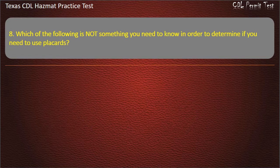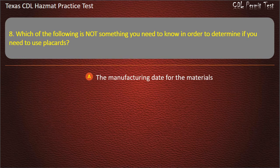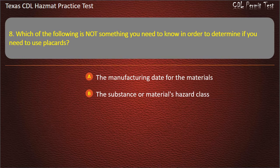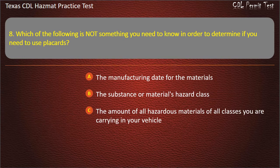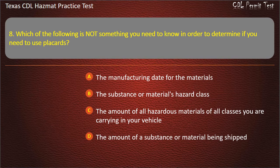Question 9: Which of the following is not something you need to know in order to determine if you need to use placards? The manufacturing date for the materials. The substance or material's hazard class. The amount of all hazardous materials of all classes you are carrying in your vehicle. The amount of a substance or material being shipped. Answer: The manufacturing date for the materials.